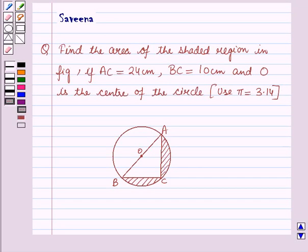Hello and welcome to the session. In this session we will discuss a question which says: find the area of the shaded region in the figure if AC is equal to 24 cm, DC is equal to 10 cm, and O is the center of the circle. Use pi equal to 3.14.